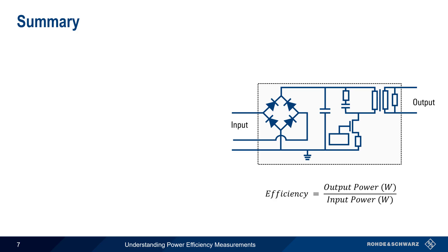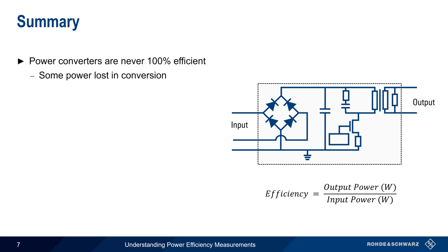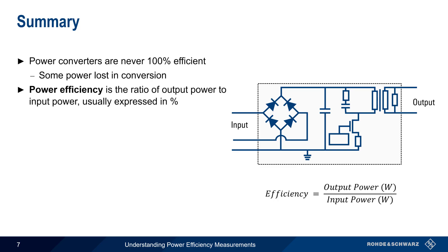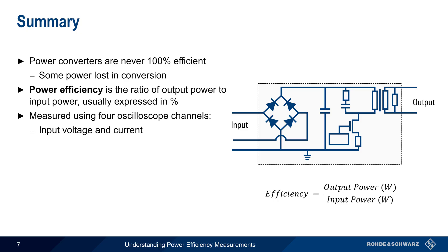Let's end with a brief summary. Although many modern power supplies and converters have very high efficiencies, none of them are 100% efficient, and some power is always lost during the conversion process. Power efficiency is therefore defined as the ratio of output power to input power, usually expressed as a percent value. Power efficiency is normally measured with an oscilloscope and requires four channels – two channels for the input voltage and input current, and two more channels for the output voltage and output current.